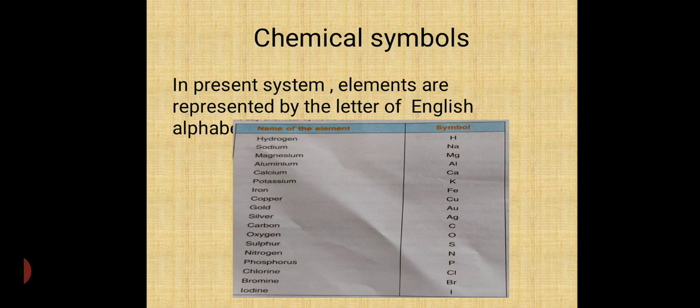Chemical symbols. See, there are lots of elements. Till now, there are more than 115 elements have been discovered. But in practice, we do not write their names. So, to make it more easier and convenient to study the chemical reaction, this substance is being represented by the chemical symbols. In present, the elements are represented by the English alphabet. Like hydrogen is represented by capital H, sodium by Na, magnesium by Mg, aluminium Al, calcium Ca, potassium K and hence onward. And in last, iodine is represented by I.